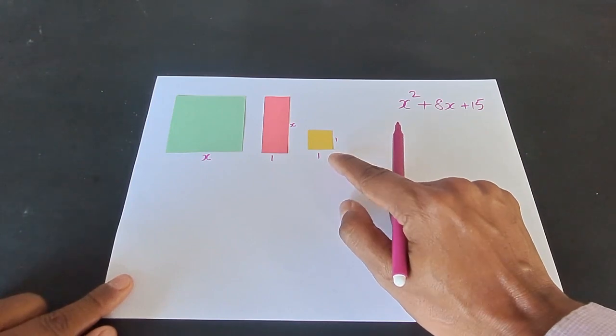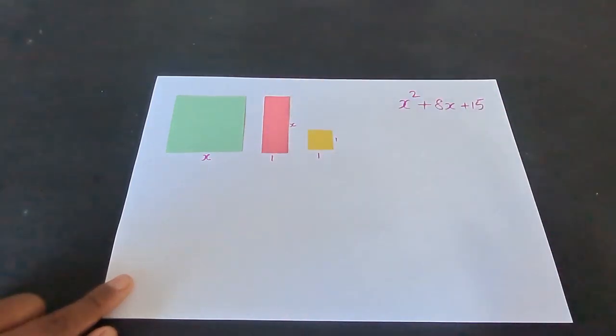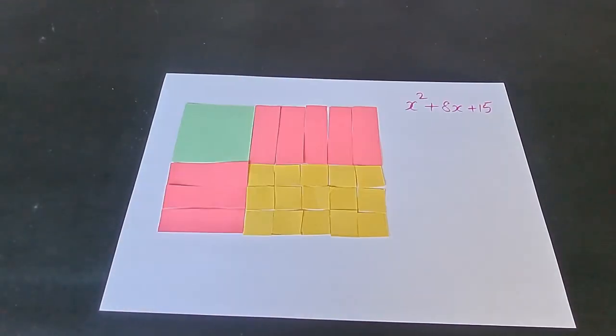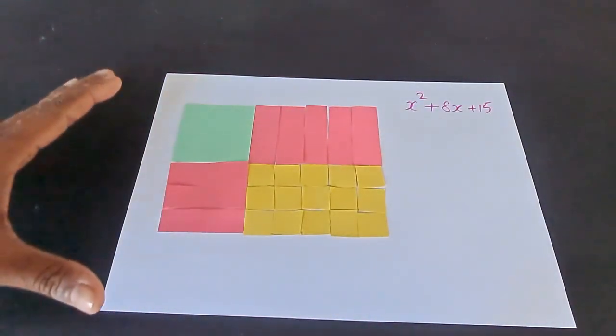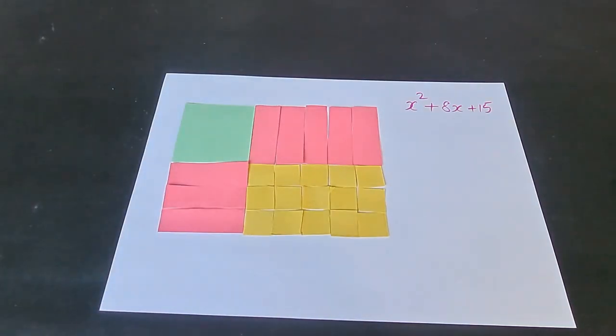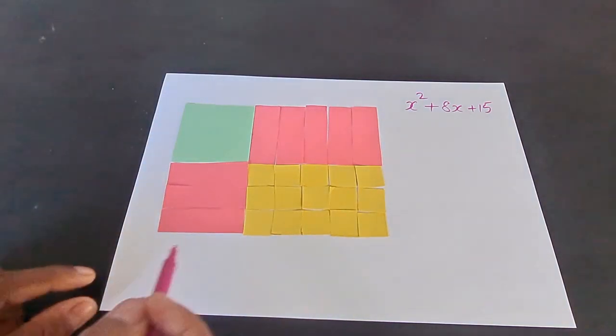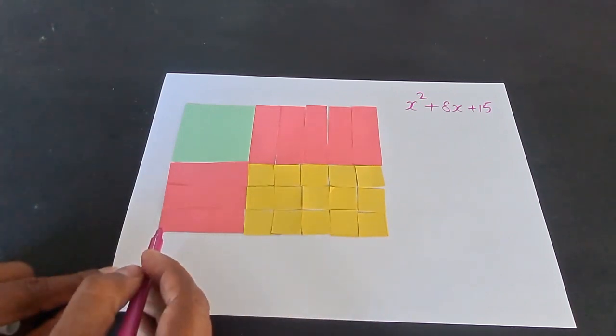So, you can see we have arranged all the cutouts in the form of a rectangle. So, what do you think is the side or the length of this rectangle?